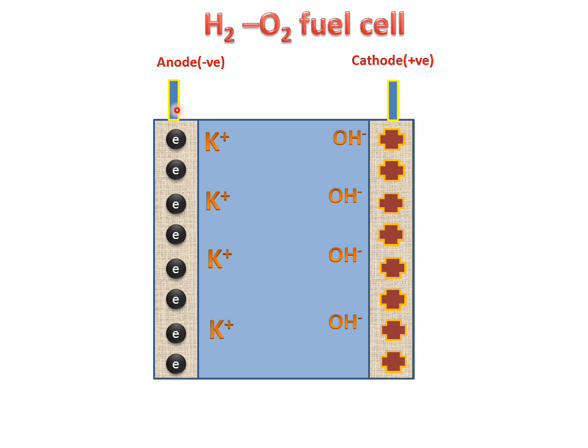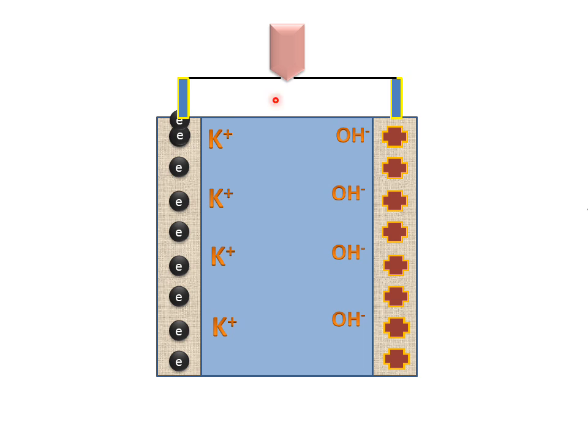This cell is open from anode and cathode ends. When we connect anode and cathode with the help of wires and with a bulb, what will happen?